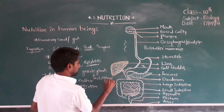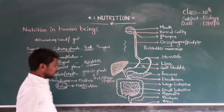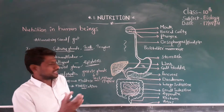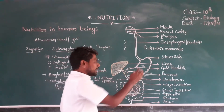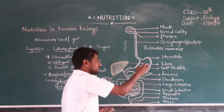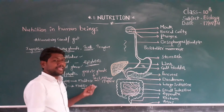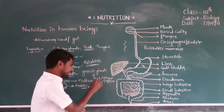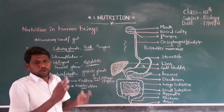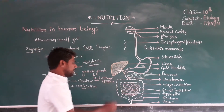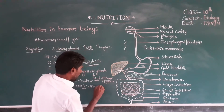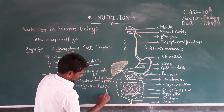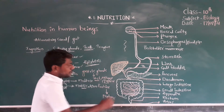The enzyme pepsin converts proteins into peptones. HCl kills the microorganisms present in food particles — if any microorganisms are there, they are killed by hydrochloric acid. HCl also breaks down the protein molecule structure, and pepsin converts proteins into peptones.